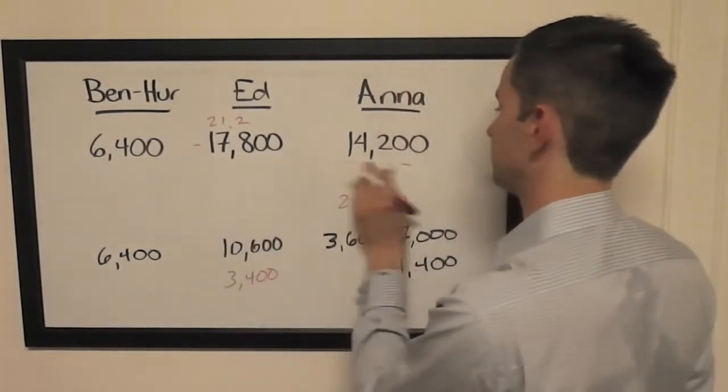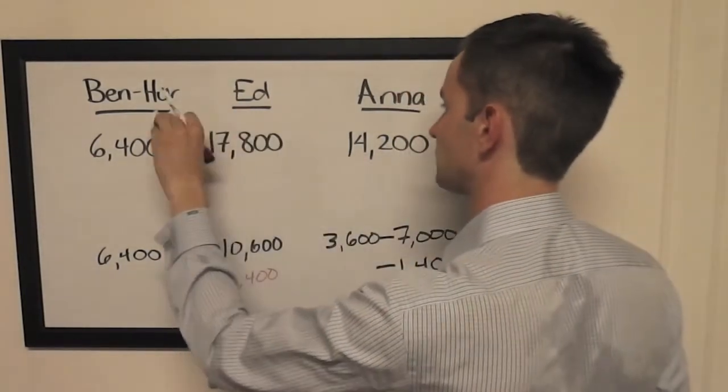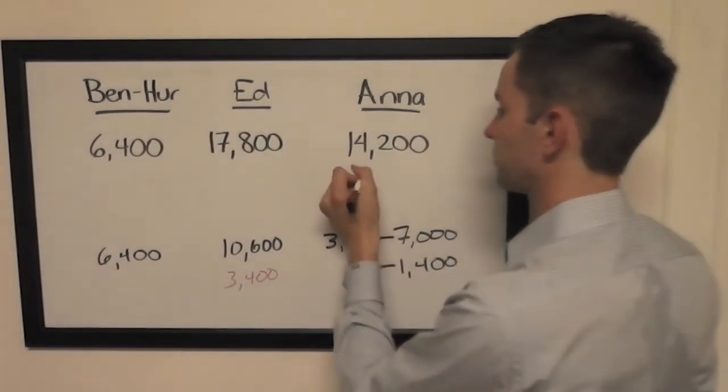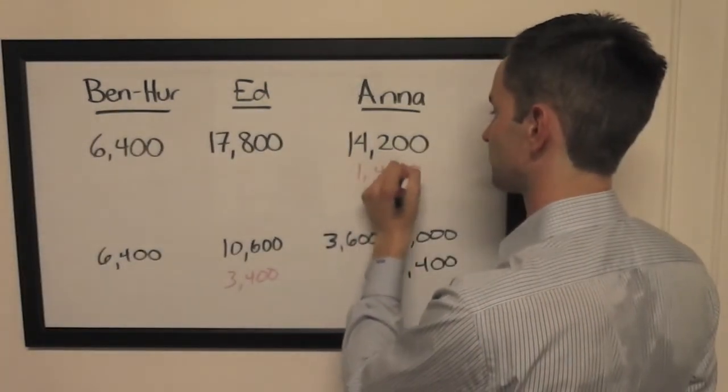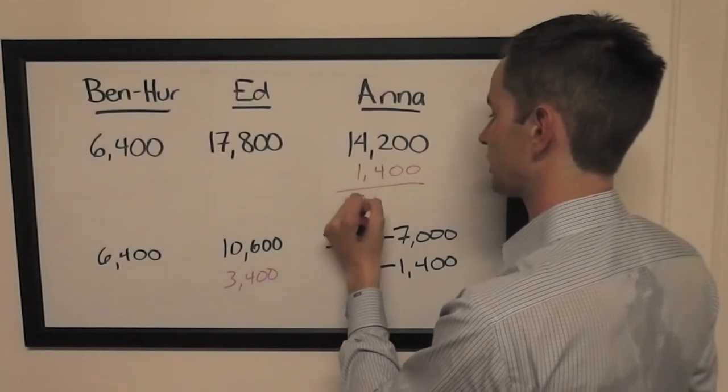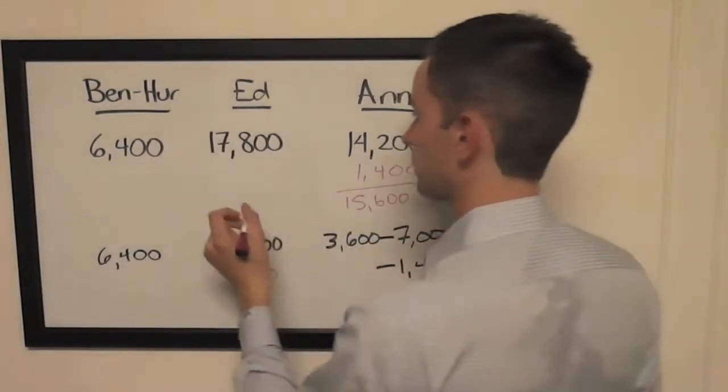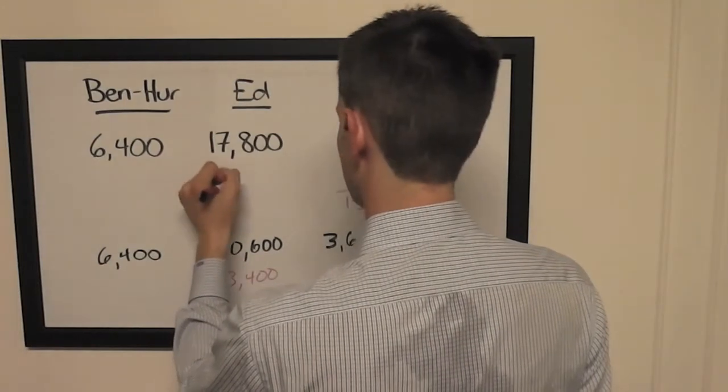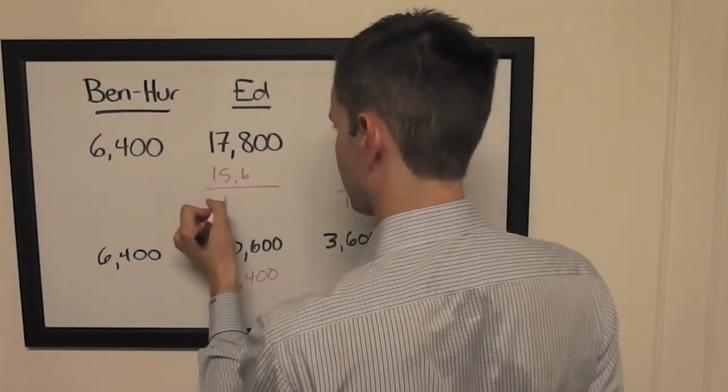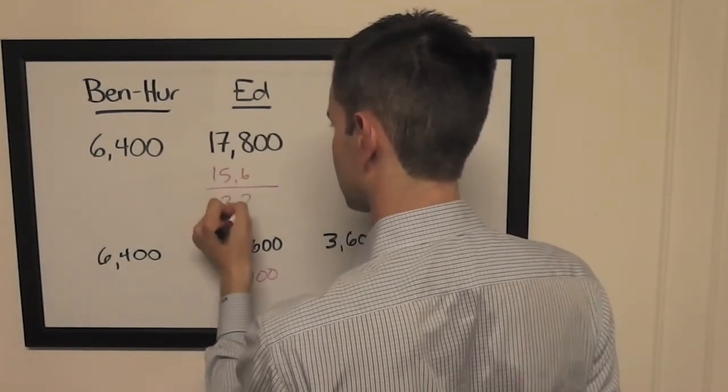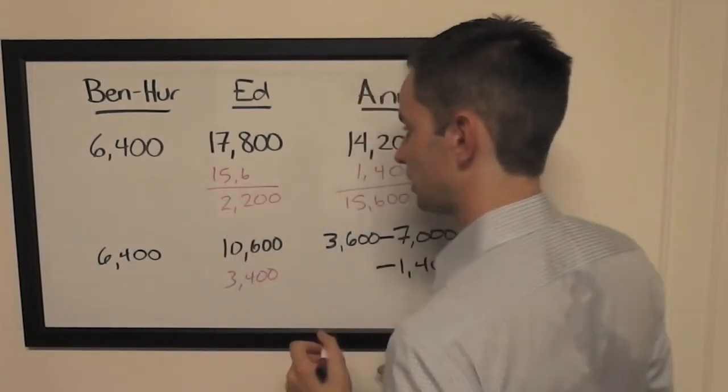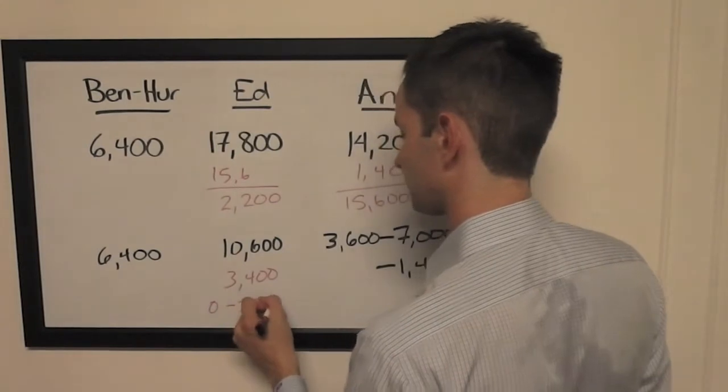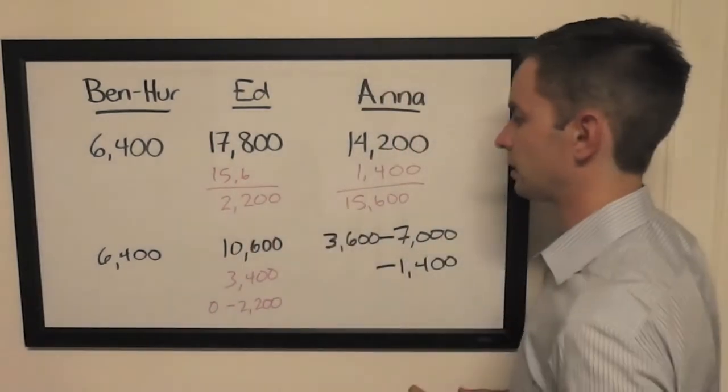Now the second thing she could do from our basic wagers is wager 1,400. In that case, she gets it right, she'll have 15,600. That means Ed would need to cap his wager at 2,200 if he thinks that Anna's going to go small.